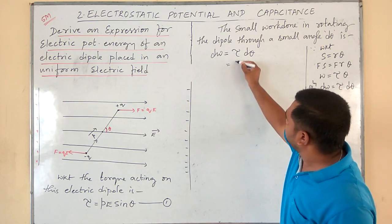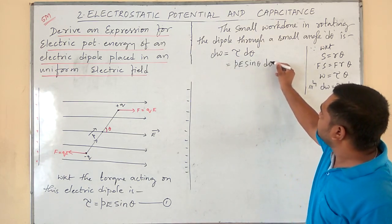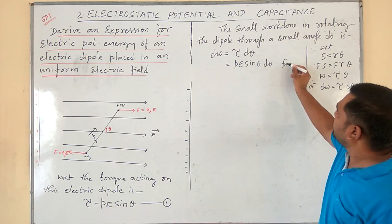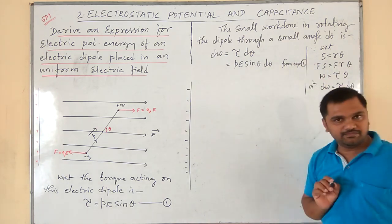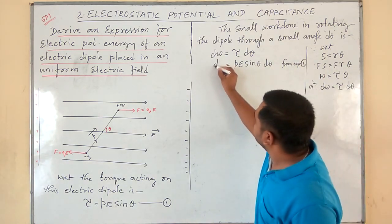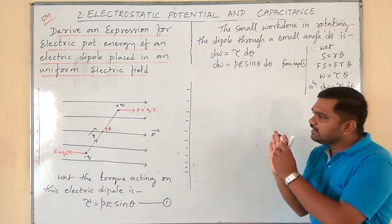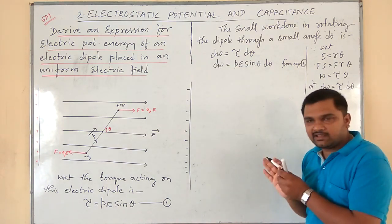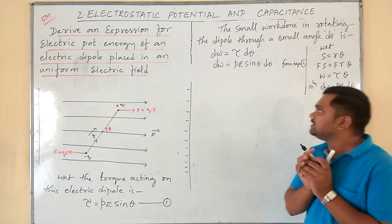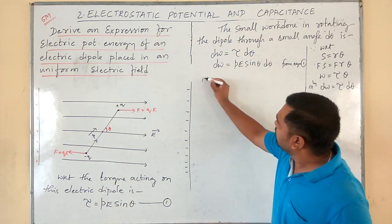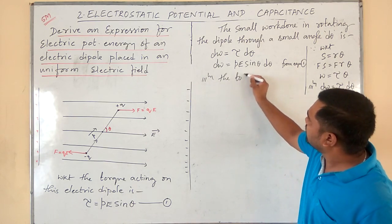This dW = pE sinθ dθ is still the small amount of work done in rotating the electric dipole through a small angle dθ.